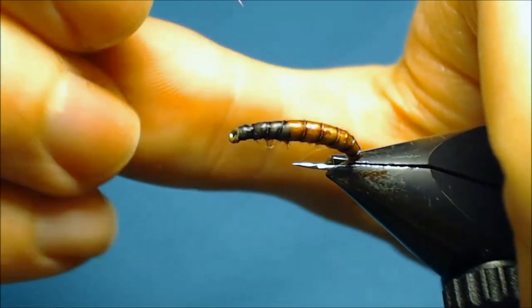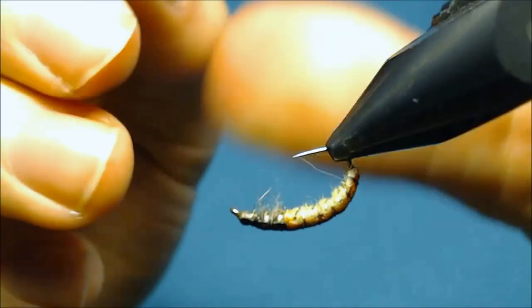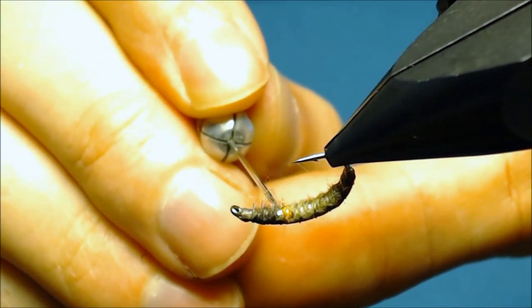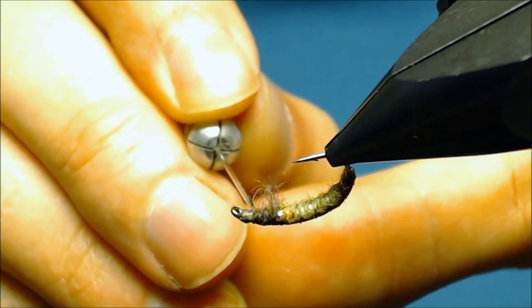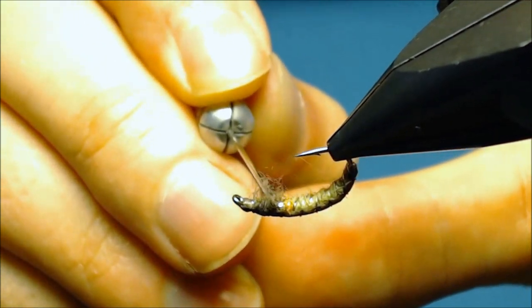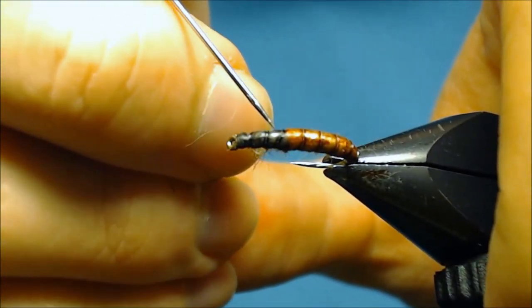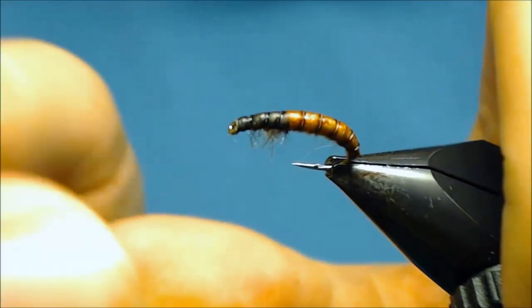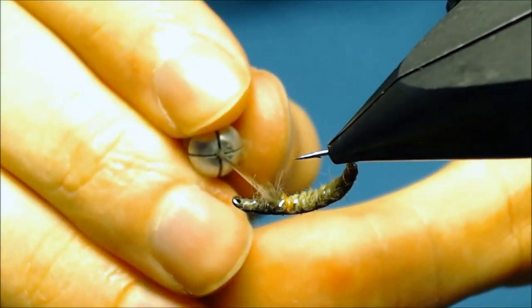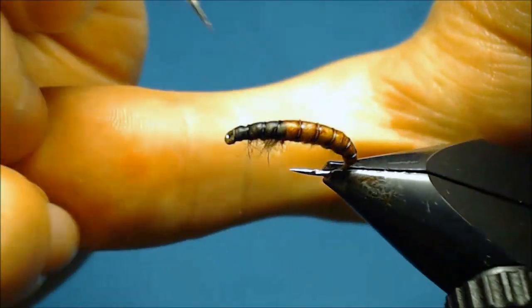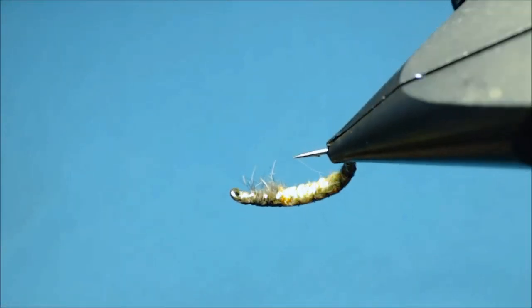And then we can pick out some of the hare mask to represent legs in front. And here the more guard hairs you have the better it is. And there's a Czech nymph.